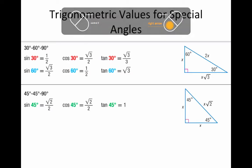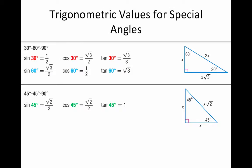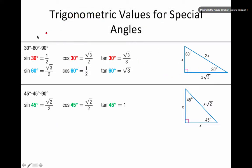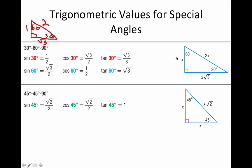For 30-60-90 special right triangles — which you dealt with extensively in geometry — you always work off the 30-degree angle. The ratio of side lengths is 1 : √3 : 2. Always work off the single x (the shortest leg). If you know the hypotenuse, cut it in half. If you know the short leg, double it for the hypotenuse, or multiply by √3 for the long leg. Dividing by √3 requires one extra step.